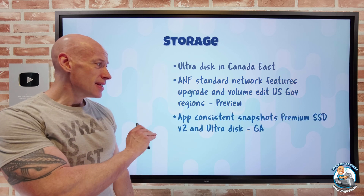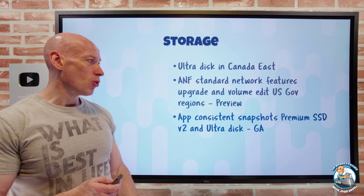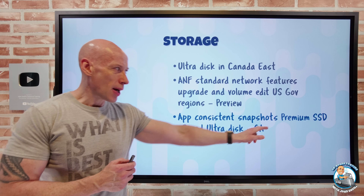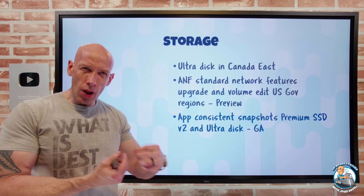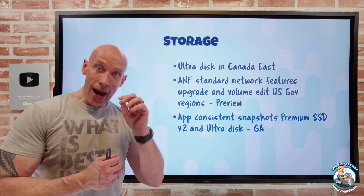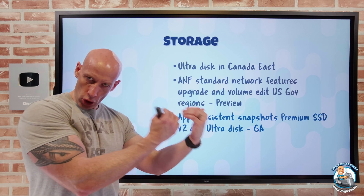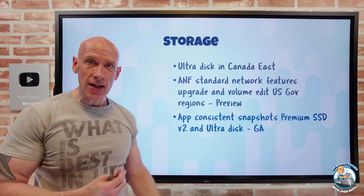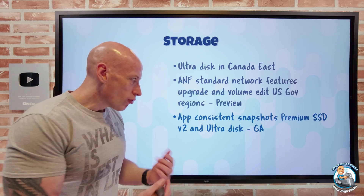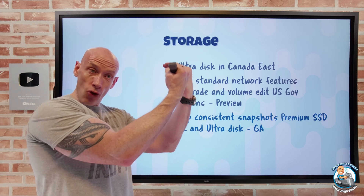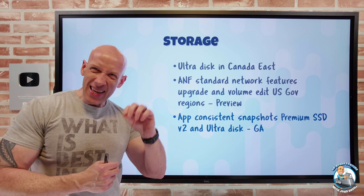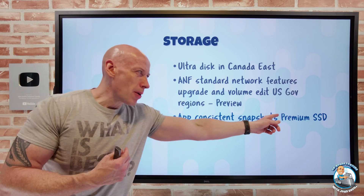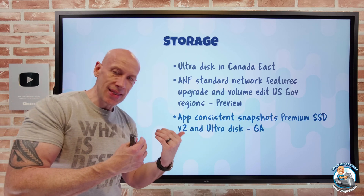App-consistent snapshots are now available for Premium SSD V2 and UltraDisk. Premium SSD V2 is similar to UltraDisk in that it has separate IOPS, throughput, and capacity dials that you can dynamically change. The key difference is UltraDisk can go to higher performance and offers sub-half-millisecond latency, while Premium SSD V2 is sub-millisecond latency.